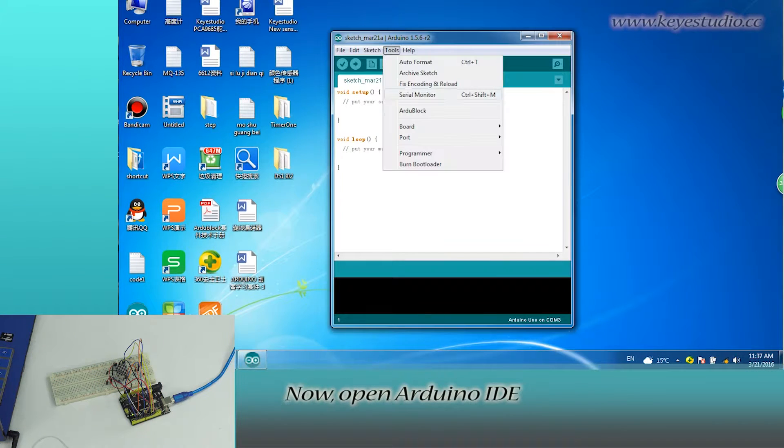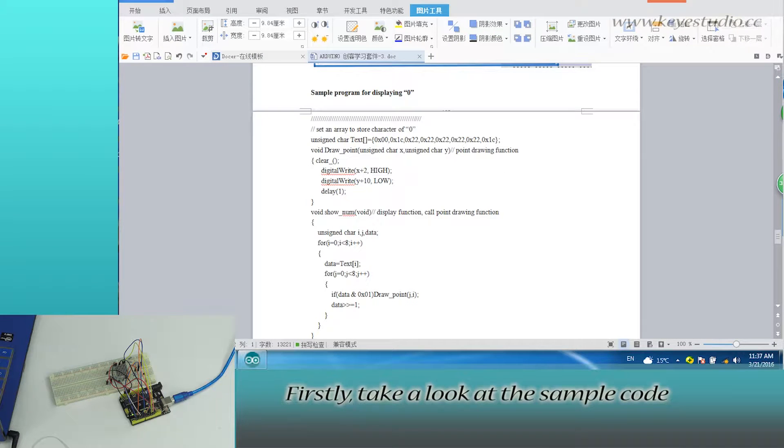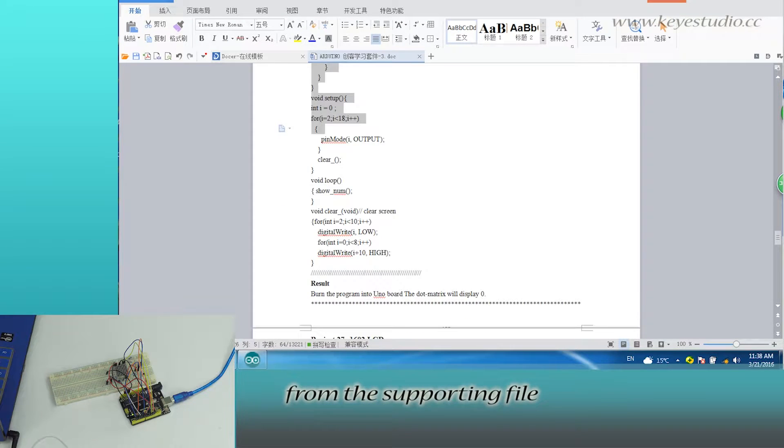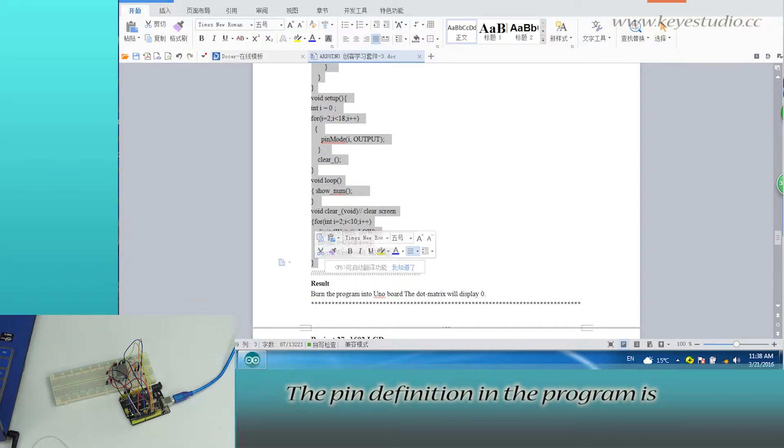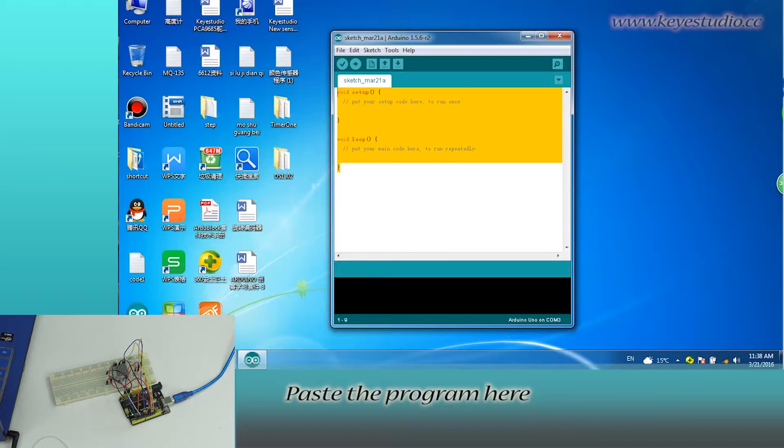Now, open Arduino IDE, select the board and COM port. First, take a look at the sample code. You can see no libraries needed. Then, directly copy the program from the supporting file. The pin definition in the program is according to the circuit connection. Paste the program here.